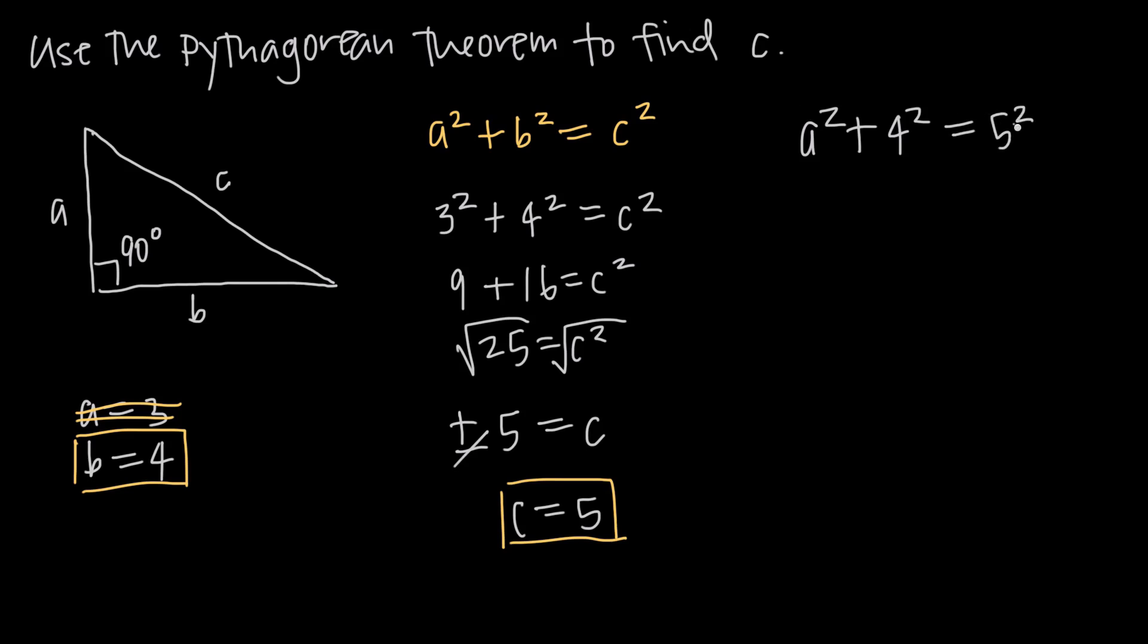Given b and c, plug these in and we're looking for a. We'll get a squared plus 16 equals 25. Subtracting 16 from both sides to get a squared by itself, we get a squared equals 9. Taking the square root of both sides, we get a is equal to positive or negative 3.